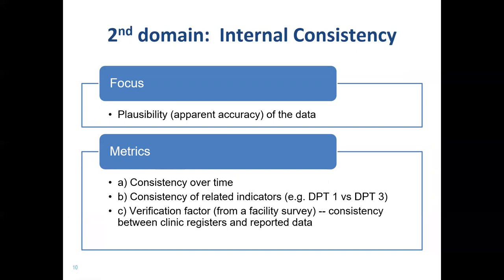There's one metric, which is the consistency over time — that is, are the data consistent from month to month. The second metric is consistency between indicators that are related, and the commonest example of this is to assess what we refer to as the DPT dropout rate: are the reported numbers of first doses of penta vaccine consistent with the numbers of third doses of penta vaccine? We'll provide some other examples of related indicators.